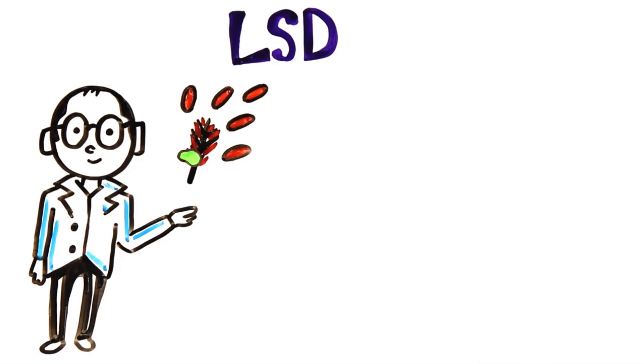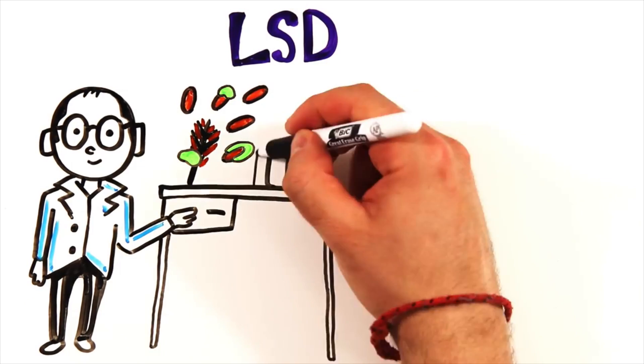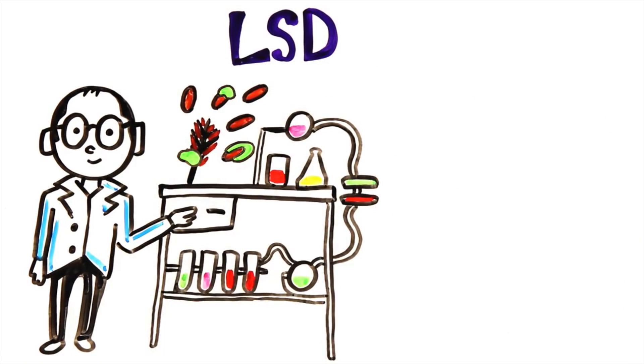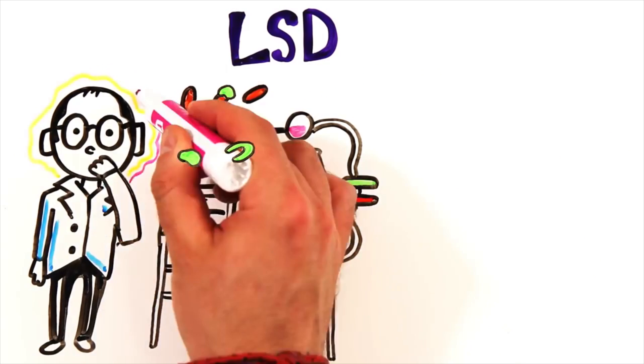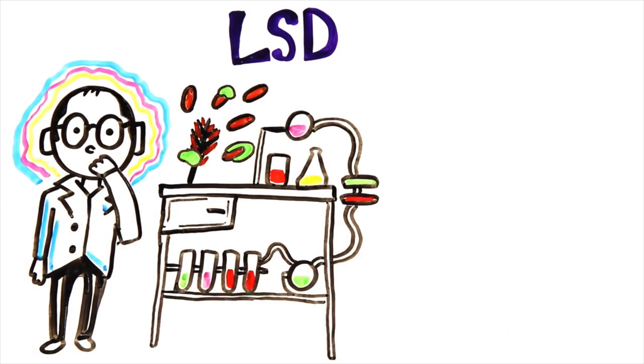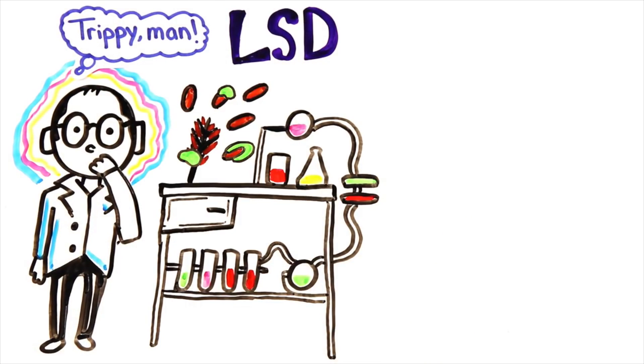Lysergic acid diethylamide was first synthesized in 1938 from a fungus that grew on rye. In 1943, the inventor Albert Hoffman accidentally touched some to his mouth, got high, and became the first person in the world to learn about the psychedelic properties of LSD.